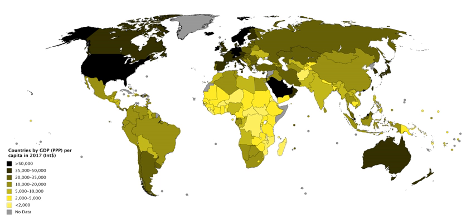William Petty came up with a basic concept of GDP to attack landlords against unfair taxations during warfare between the Dutch and the English between 1652 and 1674. Charles Davenant developed the method further in 1695. The modern concept of GDP was first developed by Simon Kuznets for a U.S. Congress report in 1934. In this report, Kuznets warned against its use as a measure of welfare.